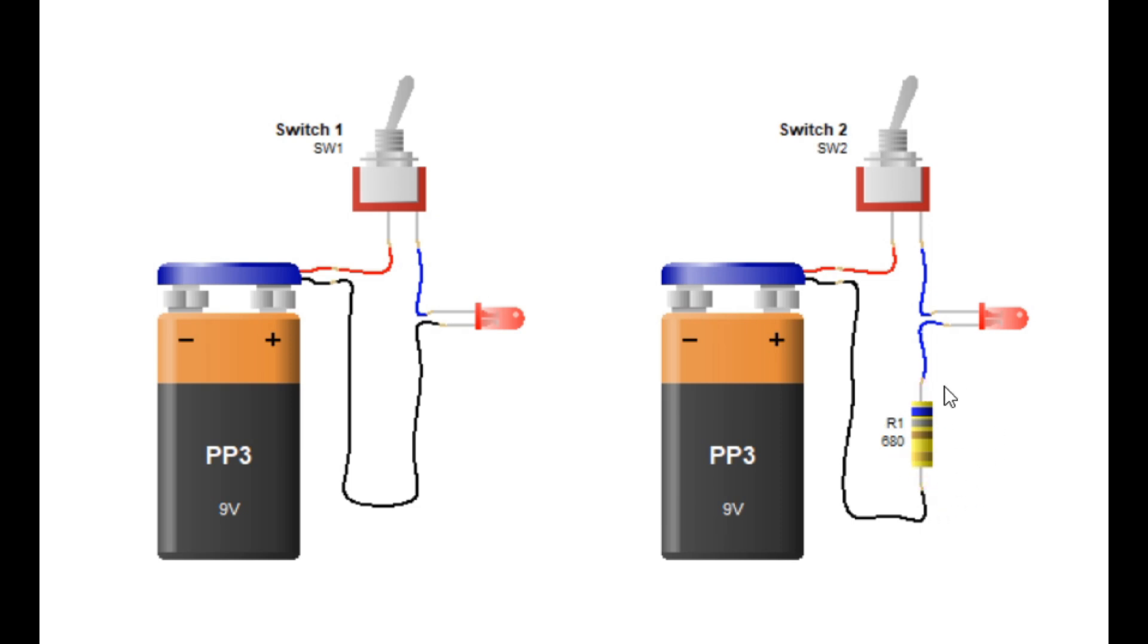Case 2: LED with a resistor. To protect the LED, we add a current limiting resistor in series with it. This resistor reduces the current flow and drops the excess voltage, ensuring the LED operates safely.